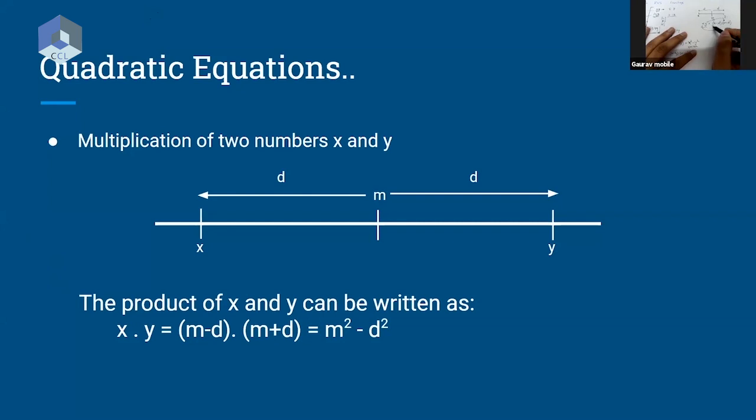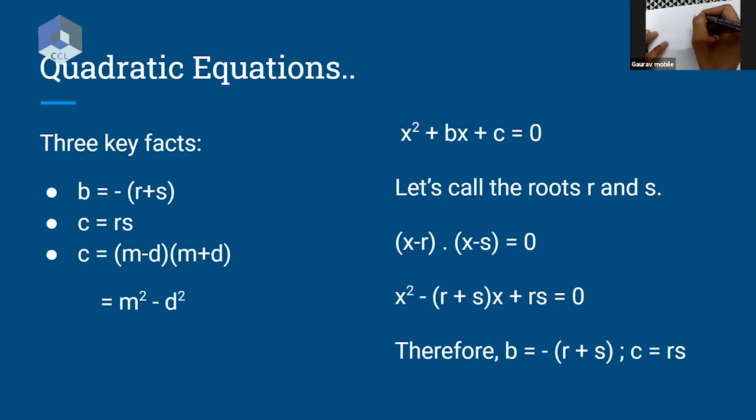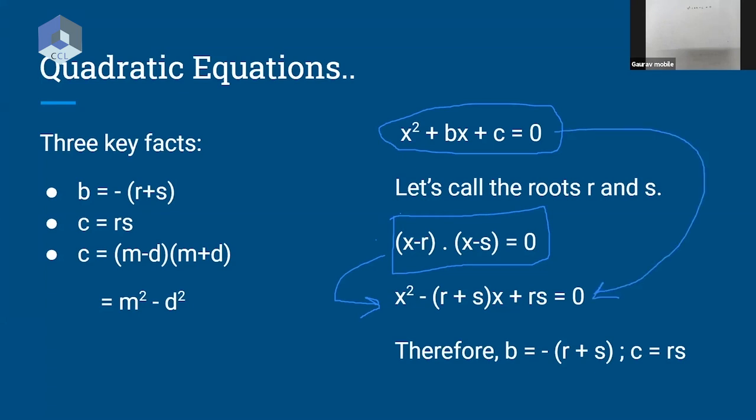For the equation x square plus bx plus c equal to zero, if we consider the roots as r and s, we can write the equation as x minus r into x minus s equal to zero. You can express this equation x square plus bx plus c equal to zero in terms of its roots. If you expand and compare these two equations, you will get that the coefficient of x is negative of sum of roots.